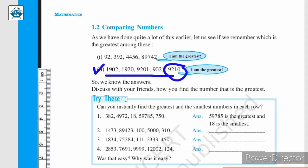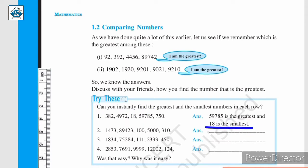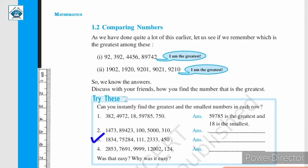So, we can just look at the number of digits and then we can find out which number is greatest and which number is smallest. Here, you can instantly find the greatest and the smallest numbers in each row. In the first part, you are given some numbers and looking at the number of digits, you can say that 59,785 is the greatest, and 18, since it has only two digits, it is the smallest number among this list. Secondly, you are given a list of numbers and again from the number of digits, it can be easily said that 89,423 is the largest and 100 is the smallest.